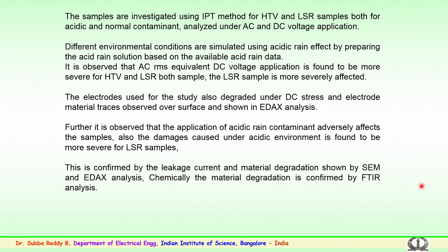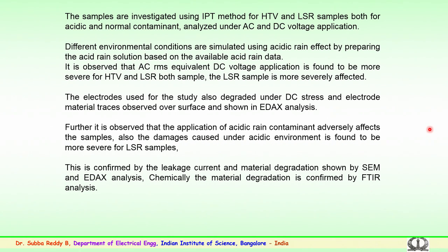Different environmental conditions were simulated using the acid rain effect as per data available in the literature. It was observed that during experimentation, both for AC and DC — where AC RMS equivalent was assumed for DC voltage application — DC stress was found to be more severe, particularly for both the HTV and liquid silicon rubber samples. In the case of liquid silicon rubber, the effect is much more severe. The electrodes used were also seen to be degraded under DC stress compared to AC stress.